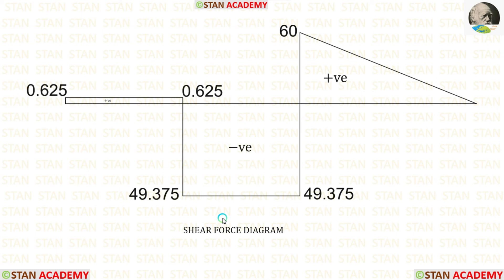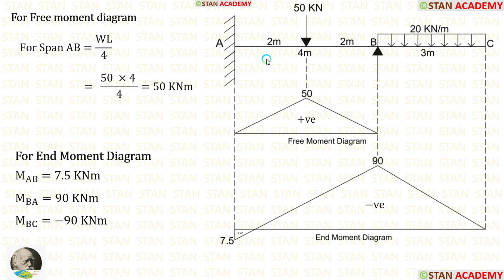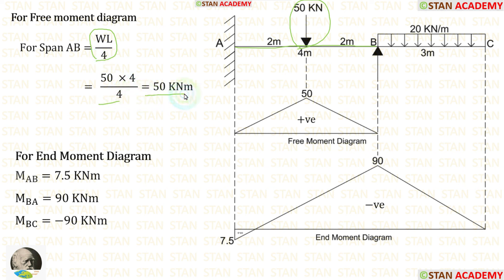Using the shear force values, we can make the shear force diagram. Now let us make the free moment diagram. We have to make the free moment diagram only for span AB — no need for the overhanging span BC. We consider span AB as a simply supported beam. There is a point load 50 kN at the center, so the maximum moment is WL/4, giving 50 kNm.